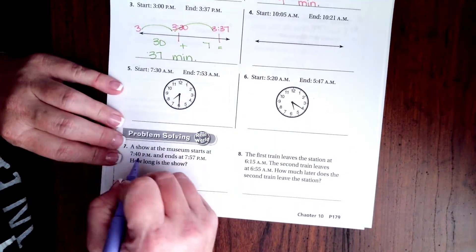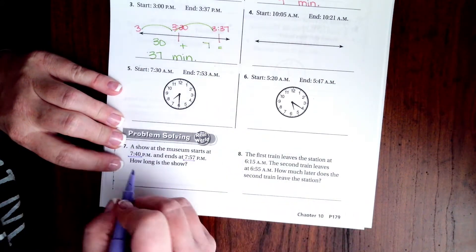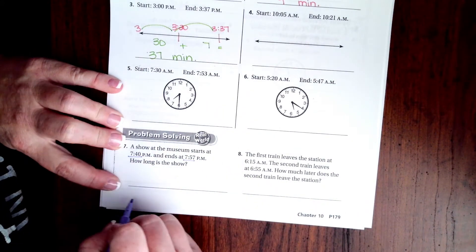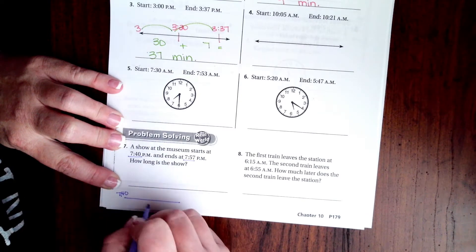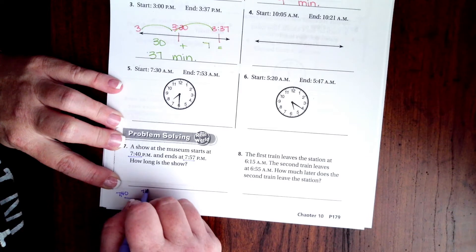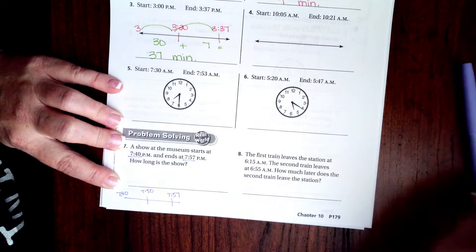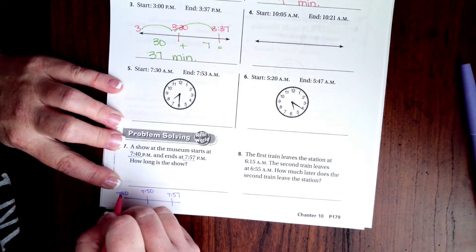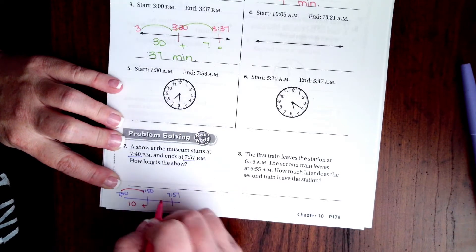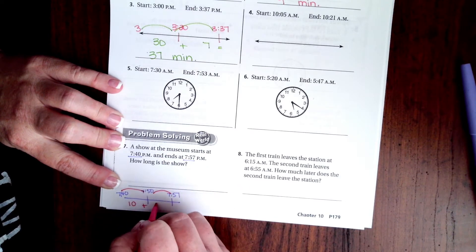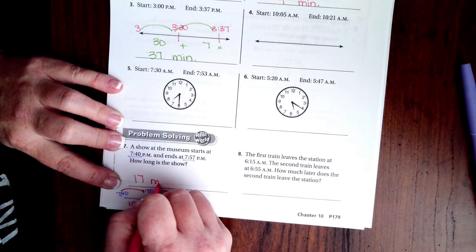It says a show at the museum starts at 7:40, it ends at 7:57. How long is the show? So I'm going to do my little number line. Here's 7:40, here's 7:50, and here's 7:57. So I have 7:40 to 7:50, that's 10 minutes, and 7:50 to 7:57 is seven minutes. Well 10 plus 7 is 17, so 17 minutes.